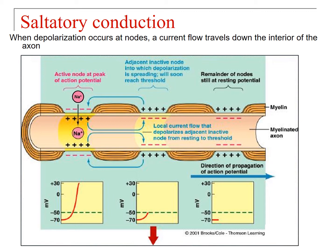Sodium ions come in and travel down the interior of the axon. When enough sodium ions reach the voltage-gated channels at the next node, they set off another action potential, and you get a continuous spread down to the next edge of the myelinating cell, with sodium flowing through in the same fashion.